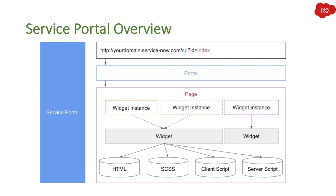When you hit the URL and the page is getting loaded, it first renders the layout automatically, and then loads the content represented by the widgets. Each widget added to a page becomes its own instance — called a widget instance — and those widget instances get their logic from the base widget template, which includes client scripts, server scripts, HTML, and CSS.